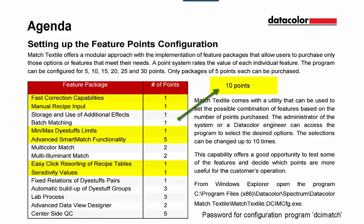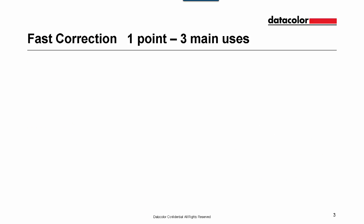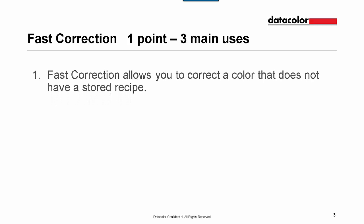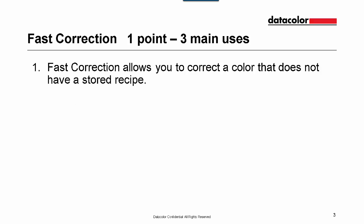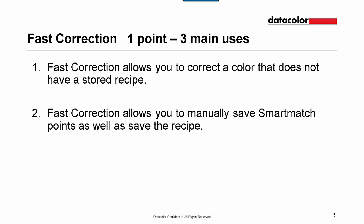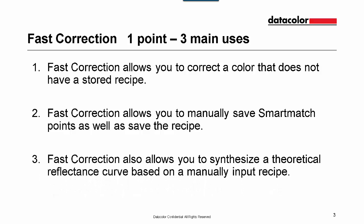Now we will look at each feature point in detail. First, Fast Correction. Fast Correction has a value of 1 point and has 3 main uses. First, Fast Correction allows you to correct a color that does not have a stored recipe. Second, Fast Correction allows you to manually save smart match points as well as save the recipe. And third, Fast Correction allows you to synthesize a theoretical reflectance curve based on a manually input recipe.